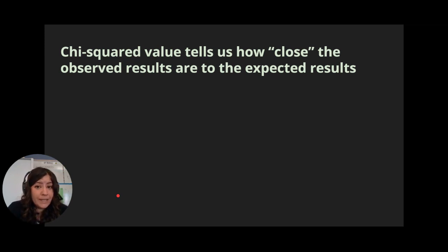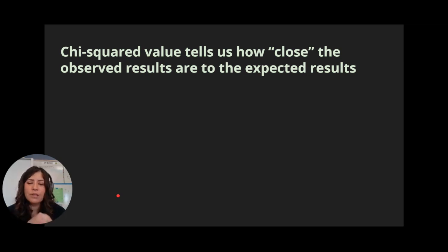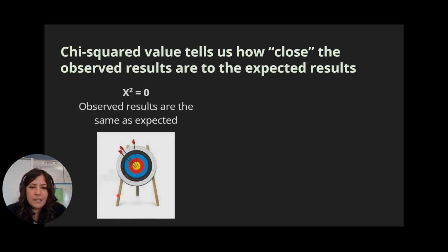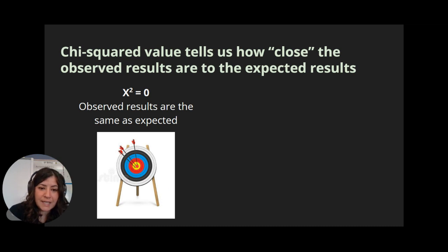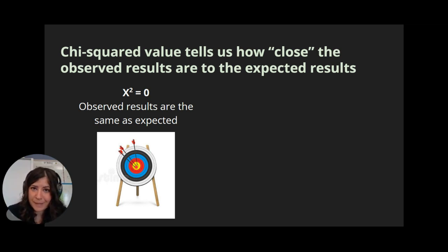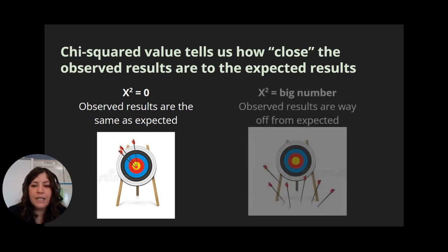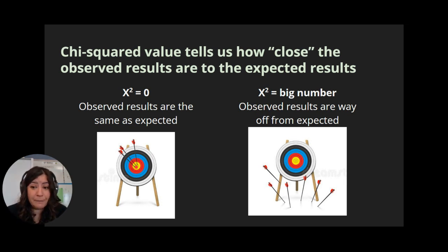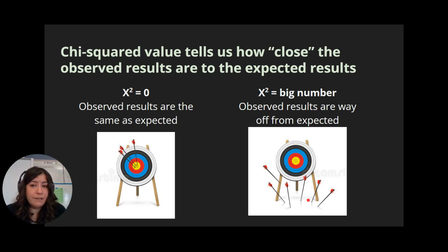The whole point of a chi-squared test is to calculate a chi-squared value, which essentially tells us how close the observed results are to what we expected. I like to think of this like a target: if you're shooting arrows and all of your arrows are right at the bullseye, then the distance between your arrows and the bullseye is going to be zero. If your chi-squared value is zero, that means your observed results are exactly the same as expected. On the other hand, if your chi-squared number is really big, that would be like your arrows are all over the place — your observed results would be very different from what you expected.